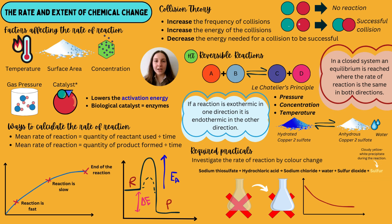Temperature: if we increase the temperature of a reaction, this increases the successful collisions and the frequency of those collisions, because the particles gain kinetic energy, causing them to move more rapidly and collide more frequently. Surface area: if we have a solid reactant and grind it down into a powder form, that increases the surface area, increasing the likelihood of collisions — a really good way of maximising the reactant and causing a faster rate of reaction.